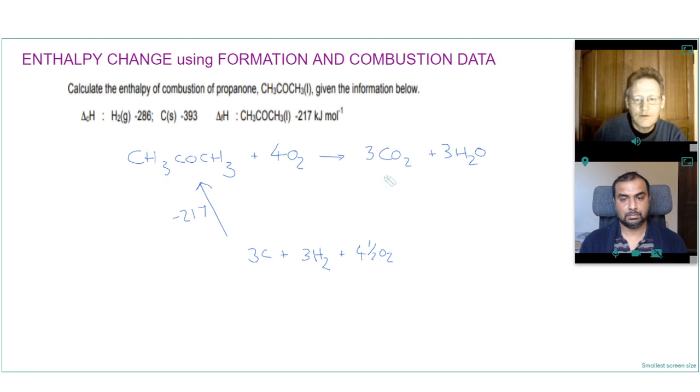And then we've got the enthalpies of combustion of hydrogen and carbon so we go away from what we're combusting. So carbon to carbon dioxide, hydrogen to water and enthalpy of combustion of carbon is minus 393. And that's times by three because it's three moles of carbon and CO2. And then hydrogen minus 286 and again that's times by three.